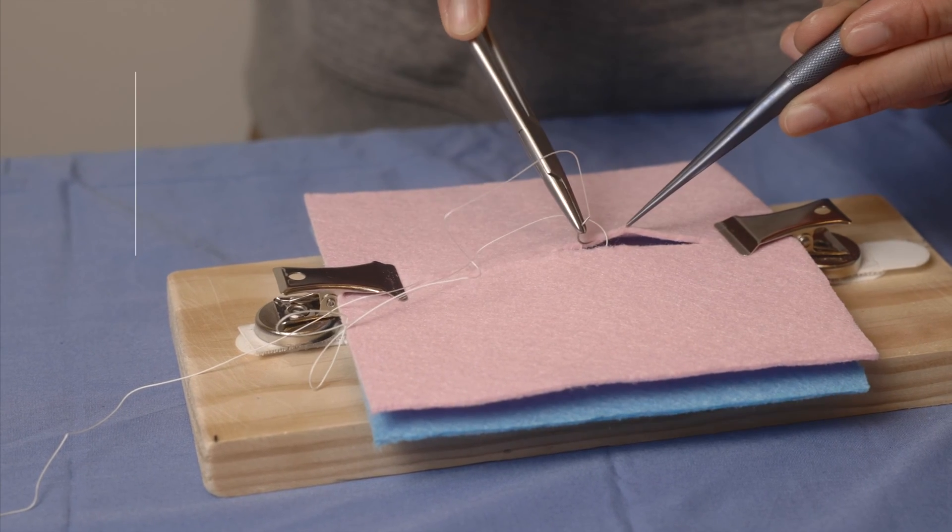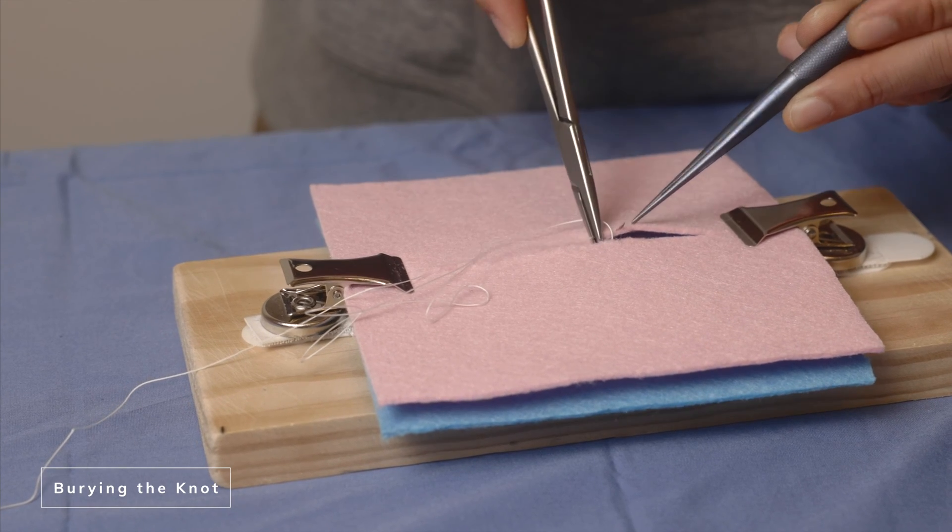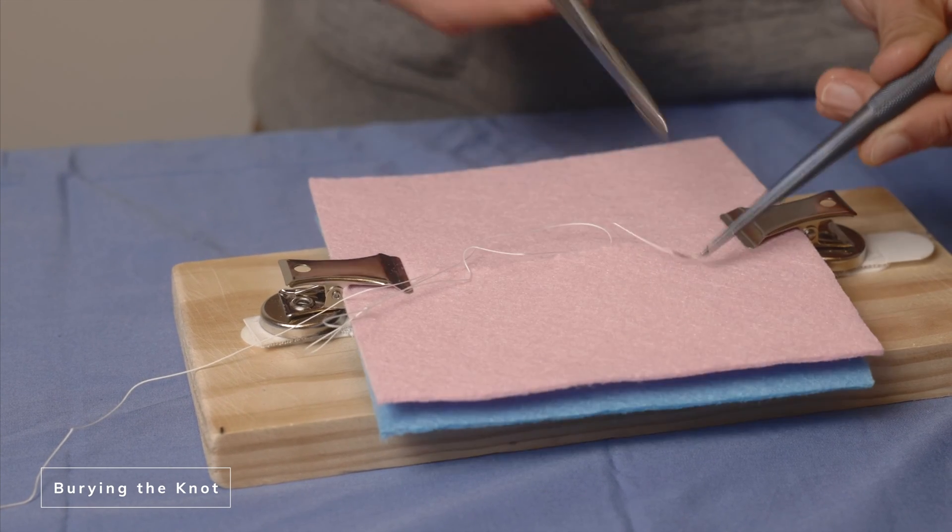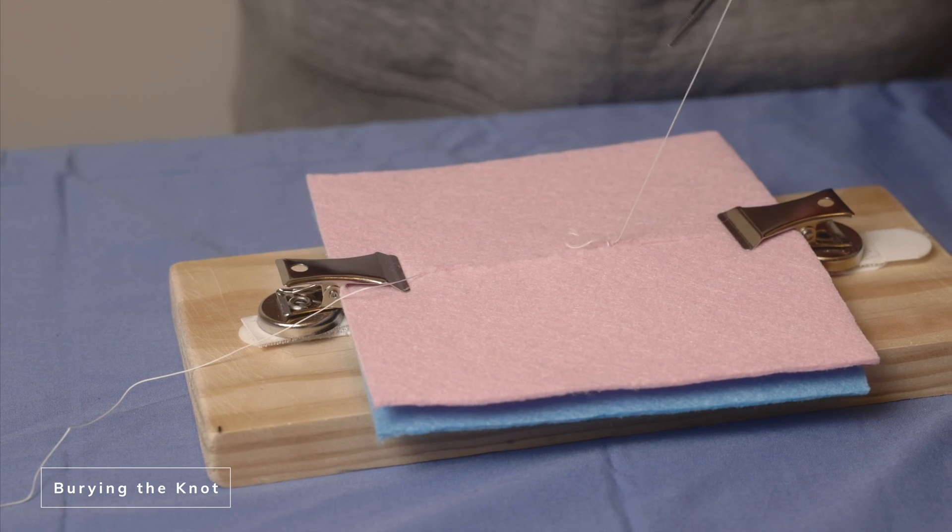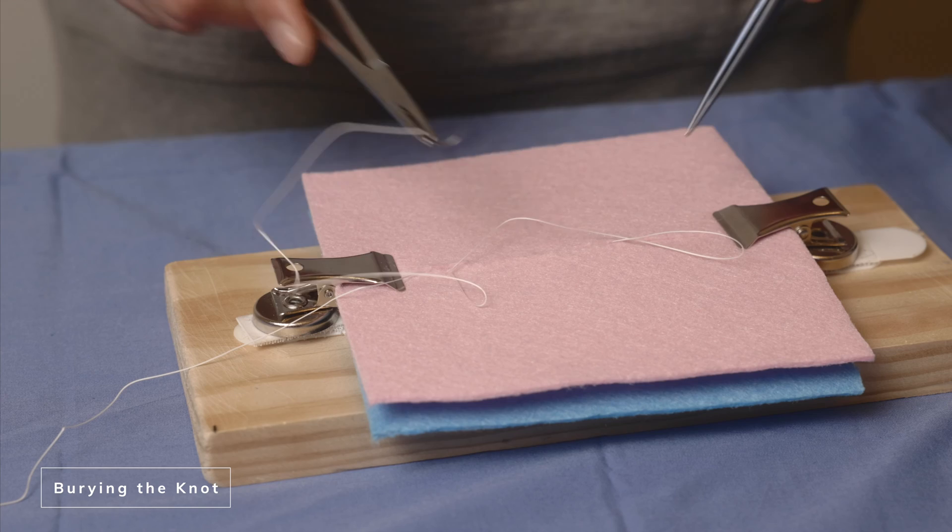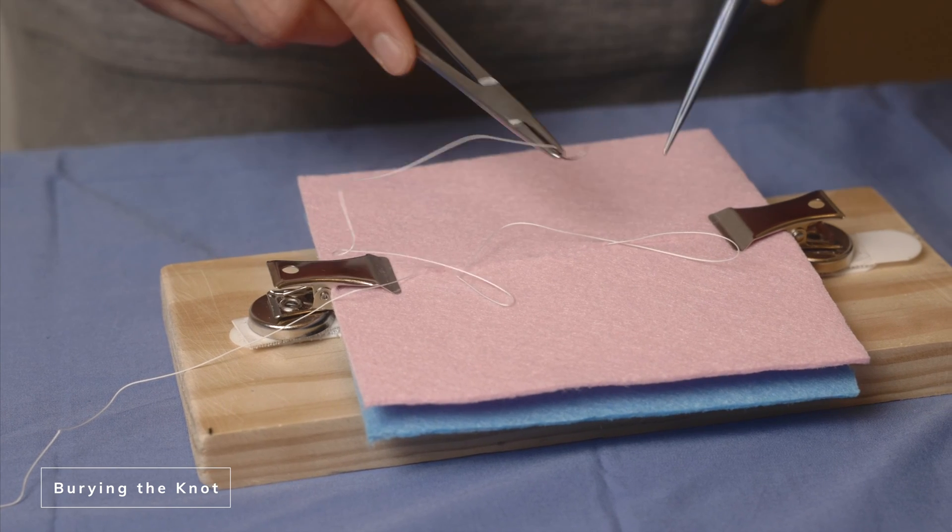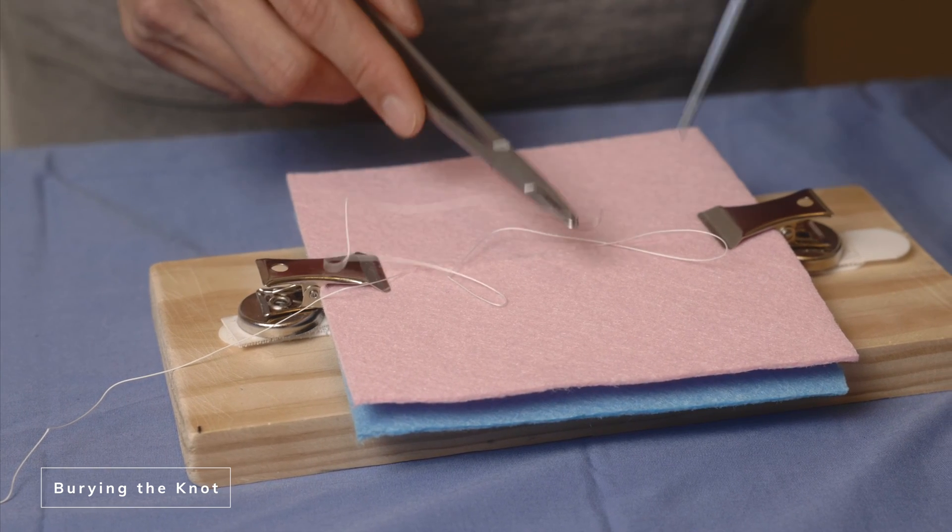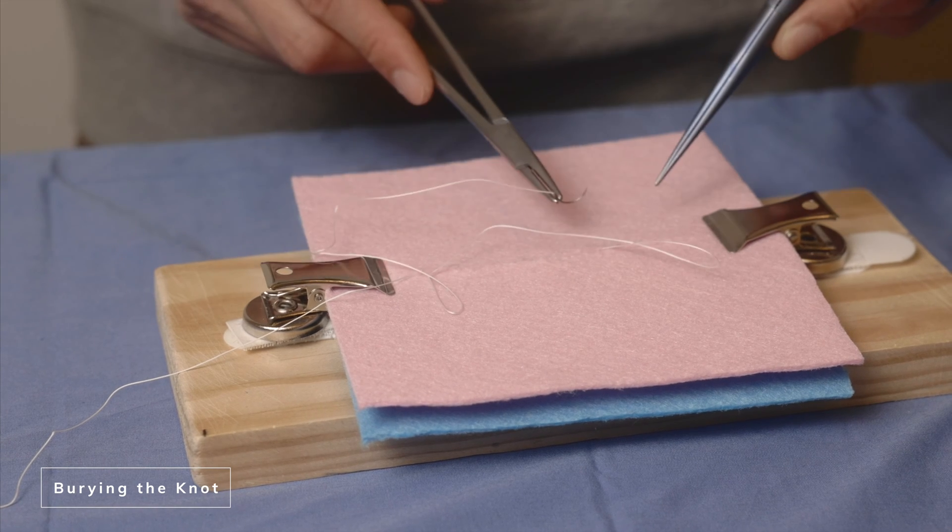So by the time you get to the edge of the incision, you would tie a knot and then ultimately anchor the knot. What anchoring the knot means is that when you tie a knot, it's going to want to stand up or stick out of the incision, which you don't want to expose any of that suture material.